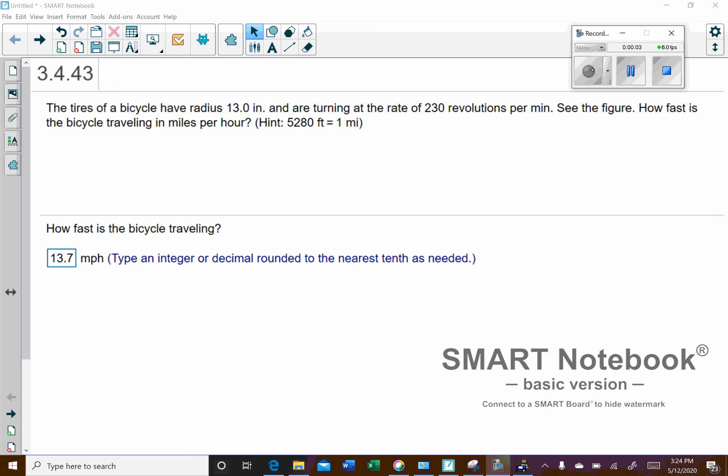Okay, so I think the answer might be correct, but let's go ahead and check it. So we have a tire that's 13—it has a radius of 13 inches and 230 revolutions per minute. How fast is the bicycle traveling in miles per hour?